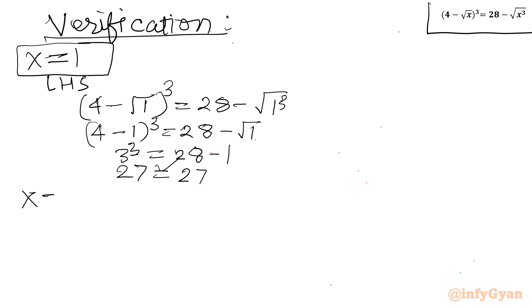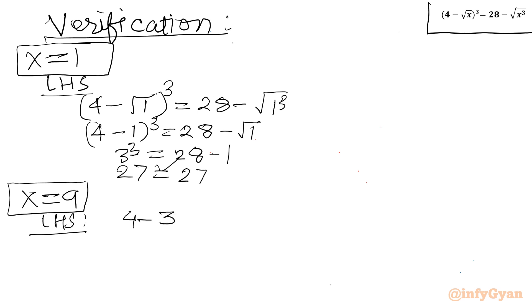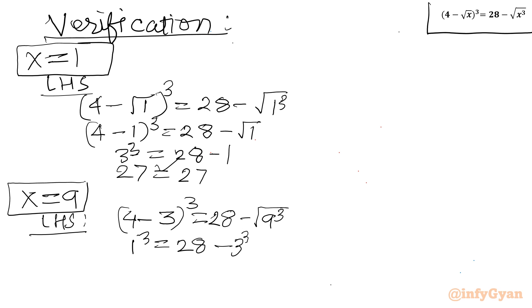For x = 9: LHS = (4 - √9)³ = (4 - 3)³ = 1³ = 1. RHS = 28 - (√9)³ = 28 - 3³ = 28 - 27 = 1. Since 1 = 1, x = 9 is also a verified solution.